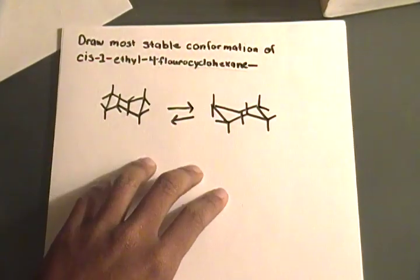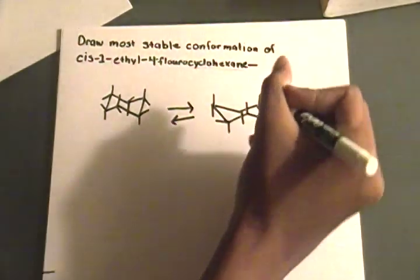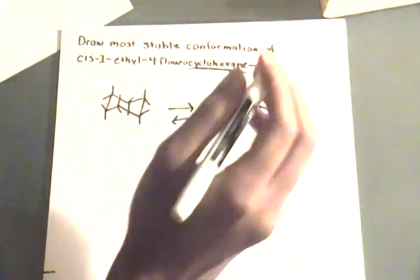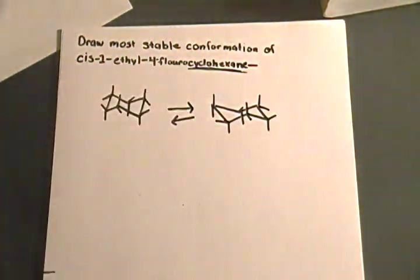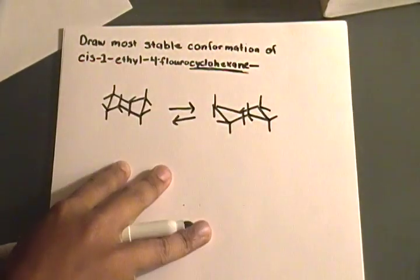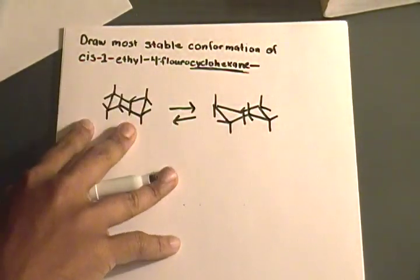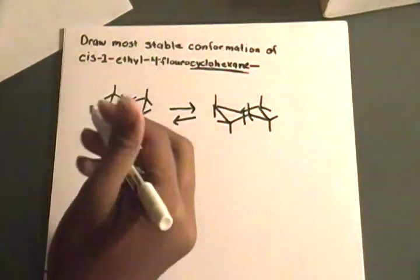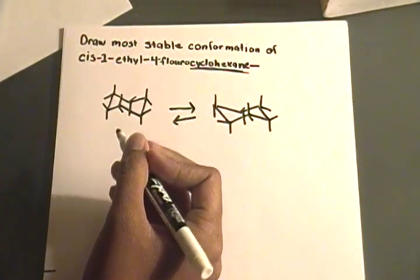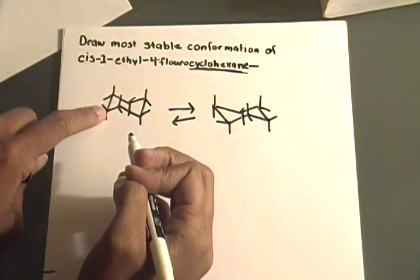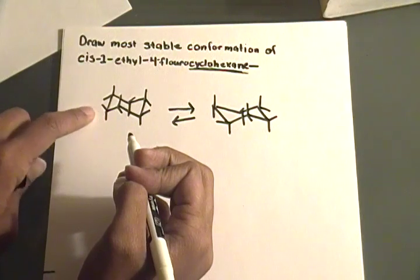And that's this part of the question, that's it. We've drawn that. Now all you have to worry about is this, cis-1-ethyl-4-fluoro. And when you're doing these, you want to pick a, you want to start, you can choose any carbon as being your number one substituent, just choose a random one, but from that one you're going to choose what your fourth one is. And I'm just going to randomly choose that this carbon is going to be my number one, and I'm going to put it on this equatorial going up right here.